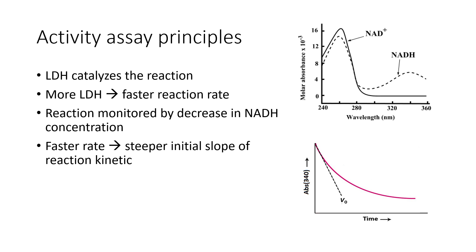What reaction is that? It's the reaction: NADH plus pyruvate makes NAD+ and lactate. LDH helps to catalyze this reaction, so the more LDH you have in any given sample the faster that reaction is going to occur. We can monitor our reaction by using the decrease in NADH concentration that we see at 340 nanometers, because NADH has a nice peak in absorbance around 340 nanometers whereas NAD+, the product, does not absorb strongly at 340.